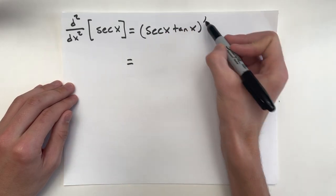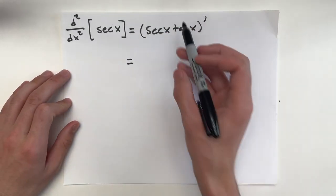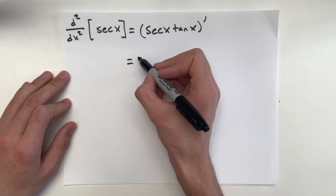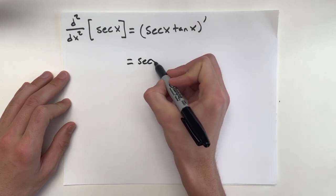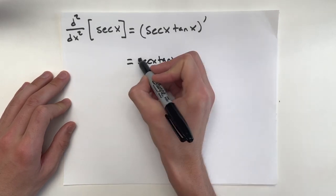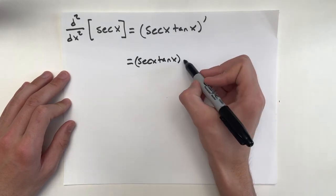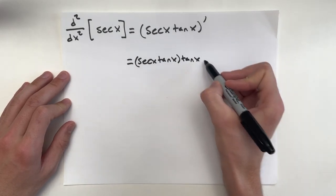We have to differentiate this again to find the second derivative. The derivative of the first term is secant x tangent x, multiplied by the second term, tangent x,